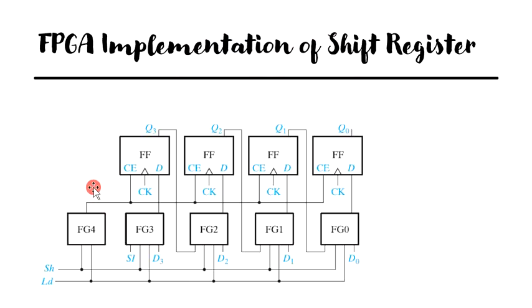So here we will make use of four LUTs or function generators to generate the D inputs to the flip-flops and you have a fifth LUT or a fifth function generator that is being used to generate the CE input. If we had implemented the equations of the parallel in parallel out shift register directly without making use of CE input, we would need to implement four five variable functions. So this would require eight LUTs because each five variable function requires two four variable function generators.